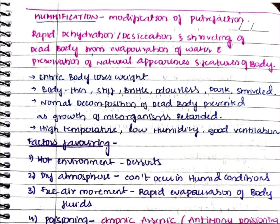Normal decomposition of the dead body is prevented because the growth of microorganisms is retarded due to evaporation of water — with no microbial growth, decomposition does not occur and the body becomes mummified. The conditions required for this are high temperature, low humidity, and good ventilation.